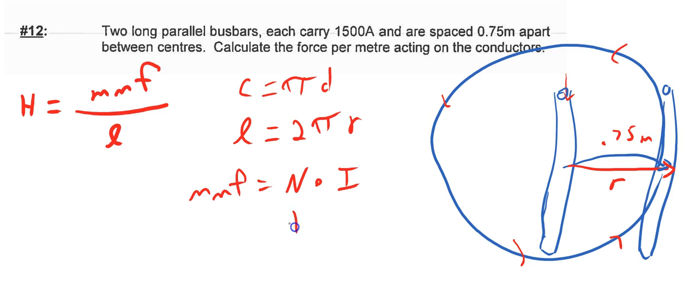And so what we're saying is that the number of conductors or the number of loops shall we say is 1, one conductor.